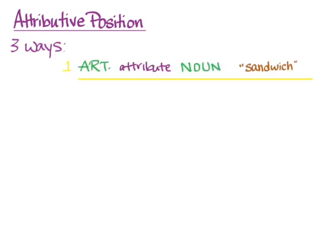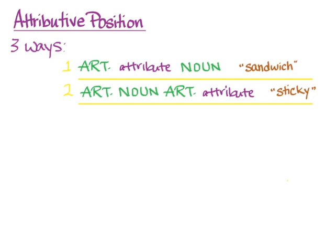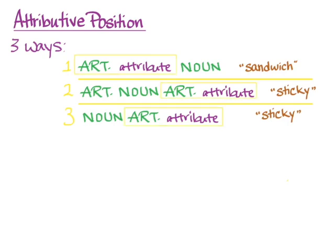So those are your three kinds of attributive position: article, attribute, noun — the sandwiching kind; article, noun, repeated article, and attribute — the sticky kind; and just noun, article, and attribute — the other sticky kind. In each case, what makes attributive position is the article immediately before the attribute. That's how you can recognize it as attributive position.